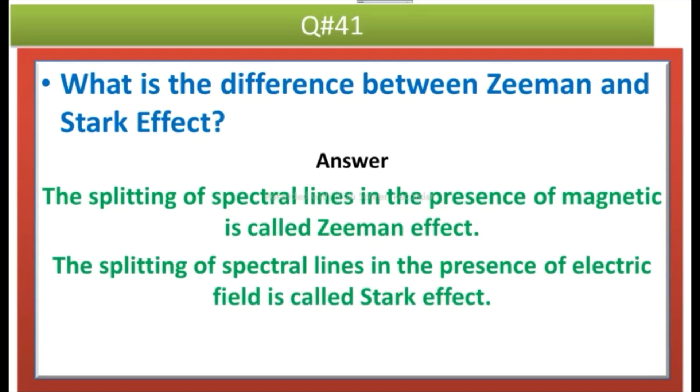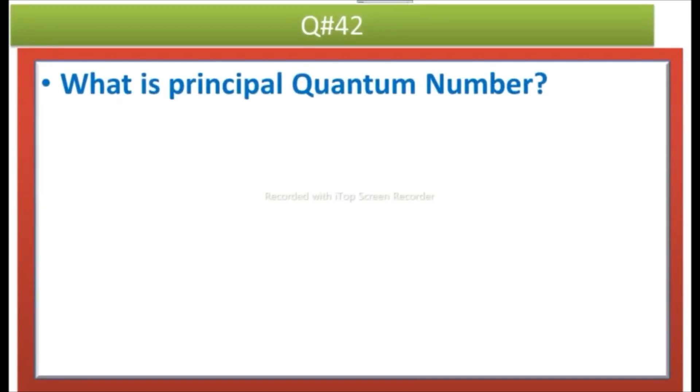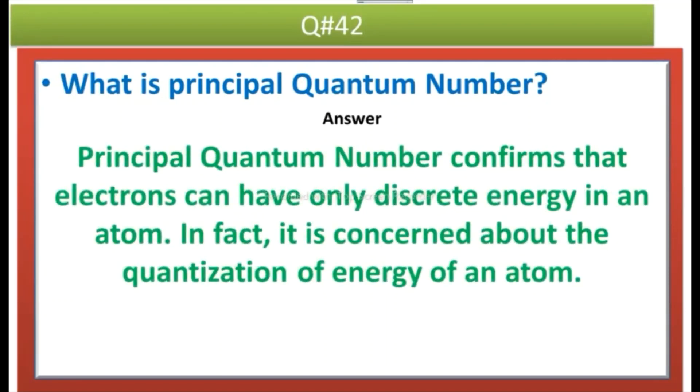The next question is what is principal quantum number? Answer: Principal quantum number confirms that electrons can have only discrete energy in an atom. In fact, it is concerned about the quantization of energy of an atom.